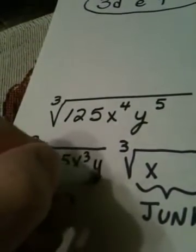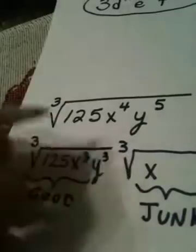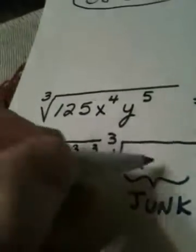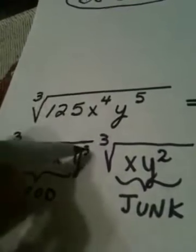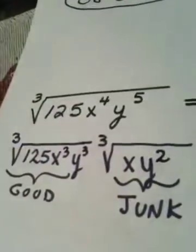So we put Y to the 3rd in the good house. And that would mean Y to the 2nd has to go in the junk house. And why is that? Because 3 plus 2 gives me 5.